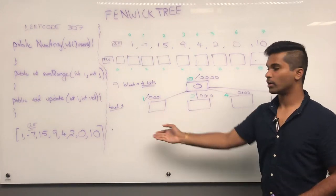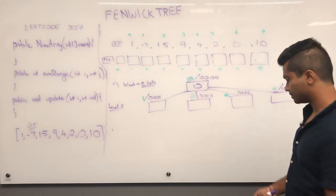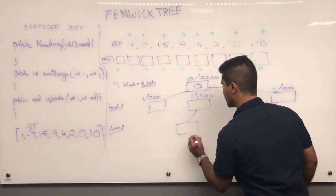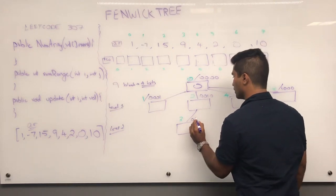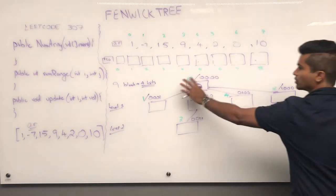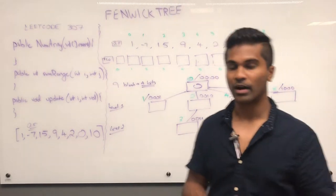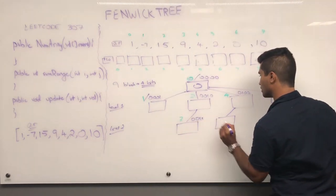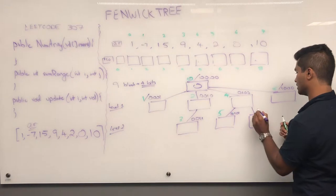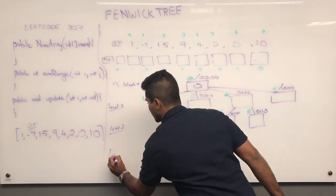We have 0, 1, 2. There's no number between 1 and 2. Between 2 and 4, we have 3, which needs 2 bits — so it goes on level 2 as 0011. Between 4 and 8, we have 5, 6, and 7. We can represent 5 (0101) and 6 (0110) using 2 bits, so they're on level 2. We still have 7, which needs 3 bits (0111), so that goes on level 3.